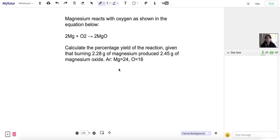Magnesium reacts with oxygen as shown in the equation below, where we've got 2Mg + O2 → 2MgO. If we have a look, it is a balanced equation. There are two magnesiums and two oxygens on the reactant side, and it produces two magnesiums and two oxygens on the product side.